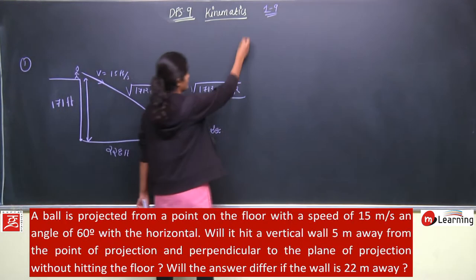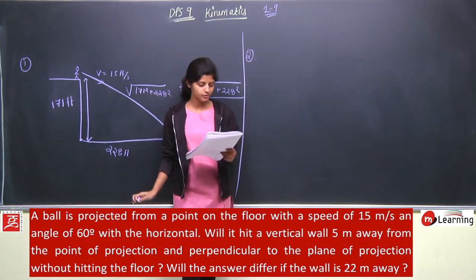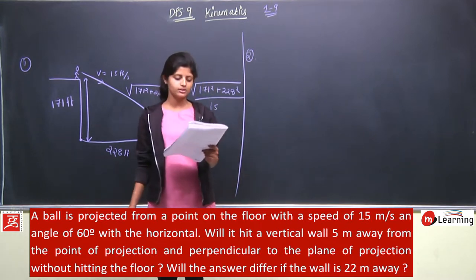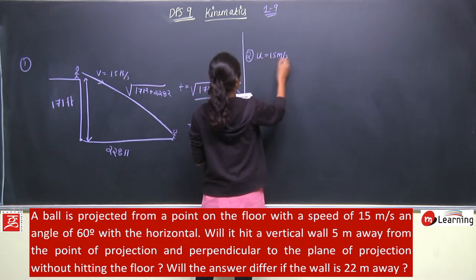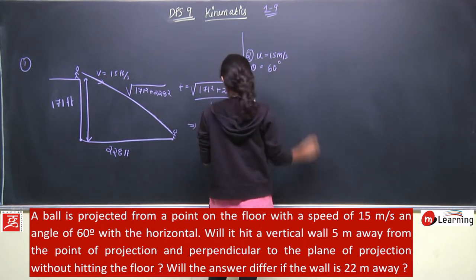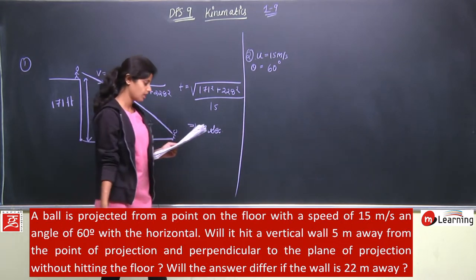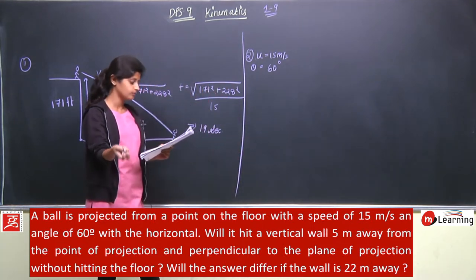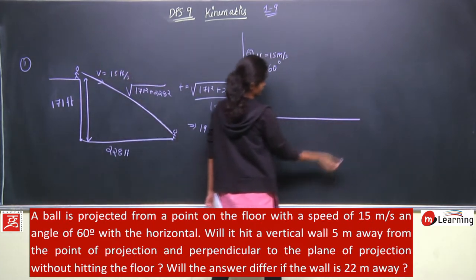Second question. A ball is projected from a point on the floor with a speed of 15 meter per second at an angle of 60 degree with the horizontal. Will it hit a vertical wall 5 meter away from the point of projection and perpendicular to the plane of projection without hitting the floor? Will the answer differ if the wall is 22 meter?